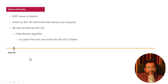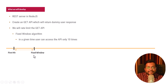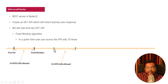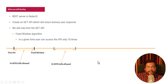In the fixed window algorithm, the timing is defined so that within a specific time the user can do only 10 API calls. If a second request comes after the fixed rate limit window threshold, we reset the bucket. If it comes before, we apply our rate limiting logic because it falls within the fixed rate limit window time.